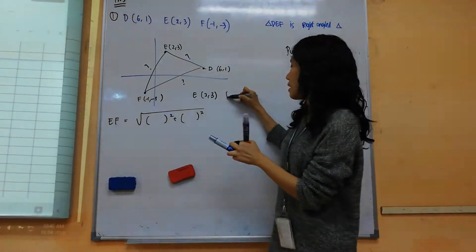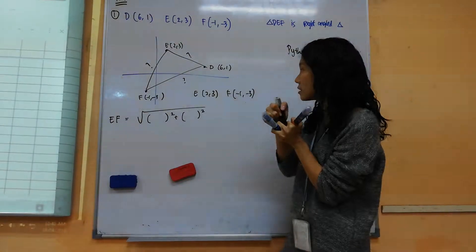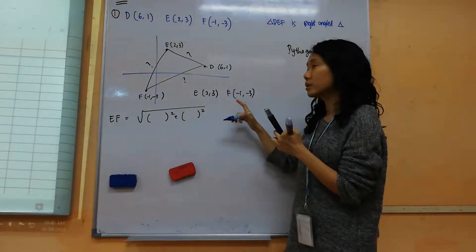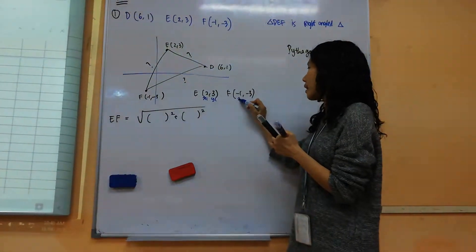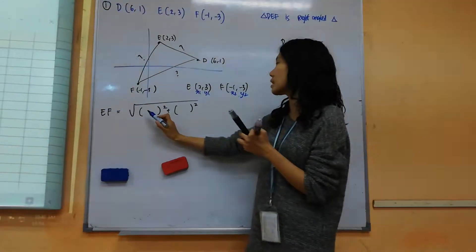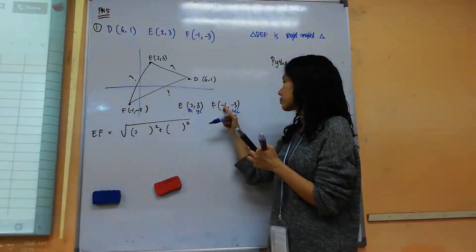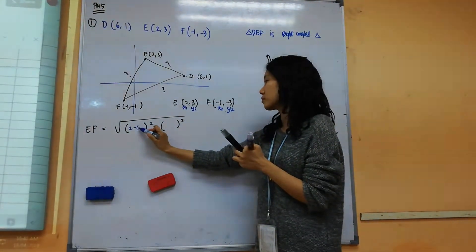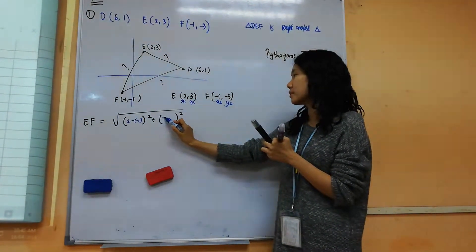E is (2, 3). F is (-1, -3). Which one do you want it to be? X1, Y1, X2, Y2. This one. X1, Y1, X2, Y2. All right. So start. 2 minus negative 1. Yes. And then the other one.